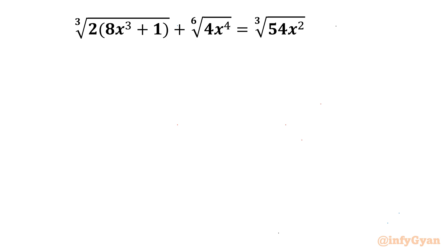Welcome back to Infigyan, my dear friends. In today's video we have a very interesting question from Radical Equations. It is: cube root of 2 times (8x³ + 1) plus 6th root of (4x⁴) equals cube root of (54x²). So let's get started.